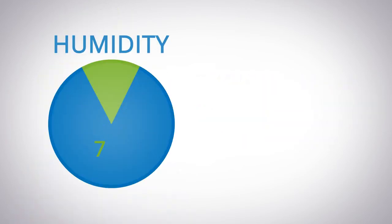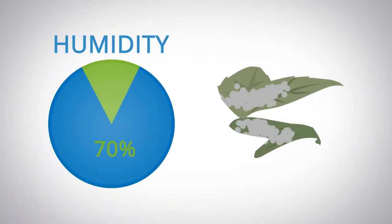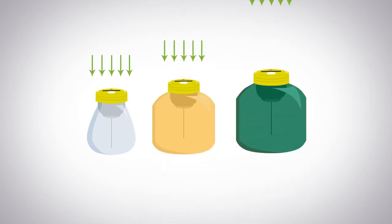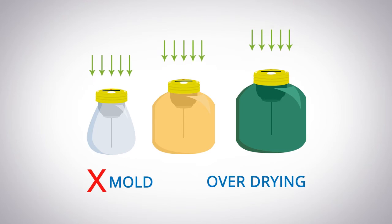Humidity levels over 70% can produce mould on some herbs. Curecork keeps your humidity levels in check by monitoring the relative humidity levels during the curing process in jars, buckets or other containers, eliminating the possibility of mould and over drying.